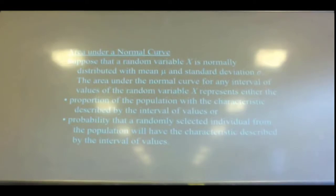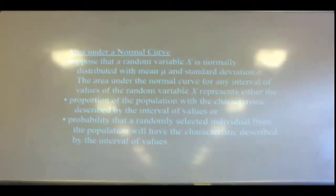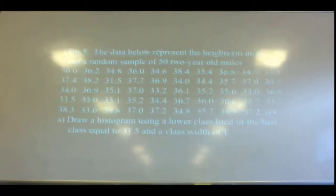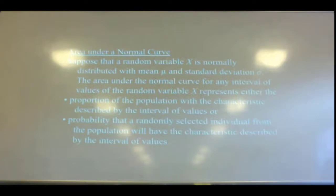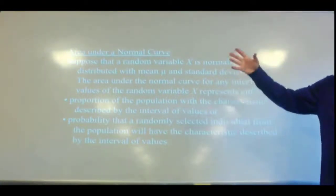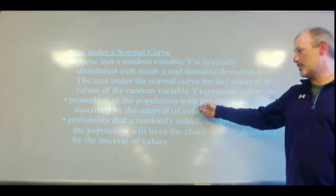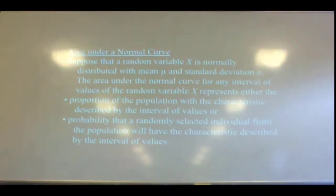Suppose that a random variable x is normally distributed with mean mu and standard deviation sigma. The area under the normal curve for any interval of the random variable x represents the proportion of the population in that group, or the probability of a selected individual being in that group — the chances that they're in that group. So it's the same thing we've been doing. Nothing really new here.